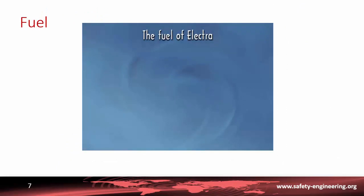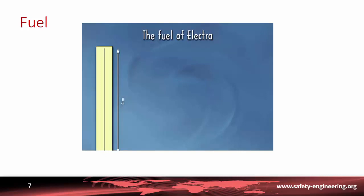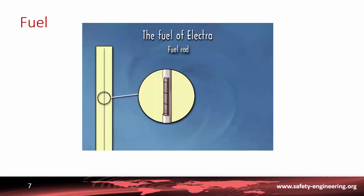The enriched uranium in which the energy is produced is contained in long thin tubes, some 4 meters in length and less than 1 centimeter in diameter — these are the fuel rods. Each rod contains a stack of cylindrical pellets made of uranium dioxide. The pellets are around 8 millimeters in diameter and 13.5 millimeters high, with around 300 in each rod. The metal tube forming the outer shell of the rod, referred to as the cladding, is made of an alloy of zirconium.